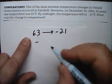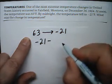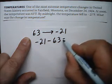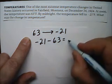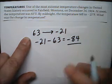So, the second number is negative 21, and we're going to subtract the first number, which is 63. So, all together, this is negative 84, and that's the answer.